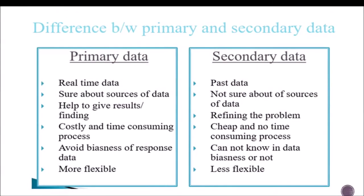The difference between primary and secondary data: primary data is real-time data, you are sure about the sources, it helps give results and findings, it is costly and time-consuming, it avoids biasness of response, and is more flexible. Secondary data, by contrast, is past data, you are not sure about the sources, it is cheap and less time-consuming, you cannot know if the data is biased or not, and it is less flexible.